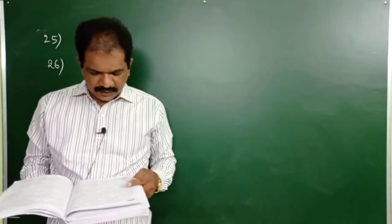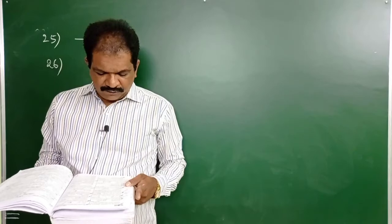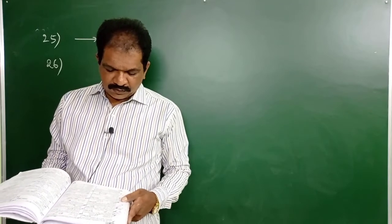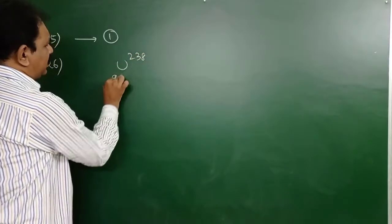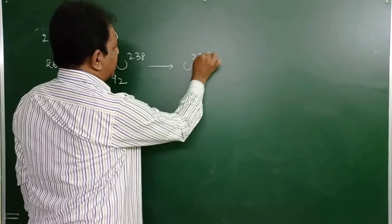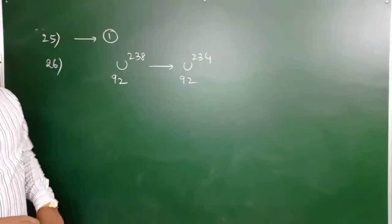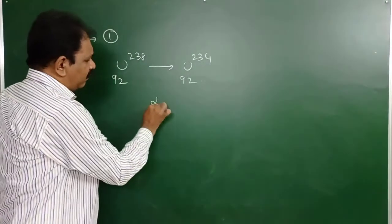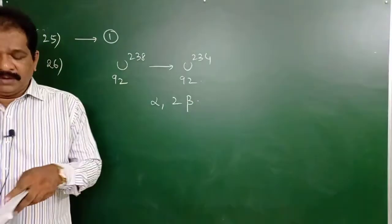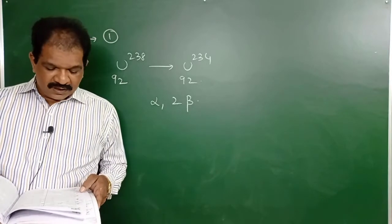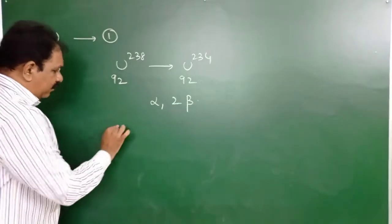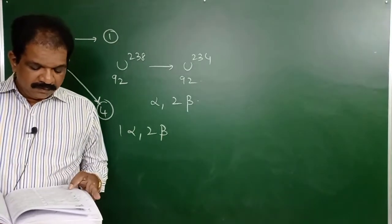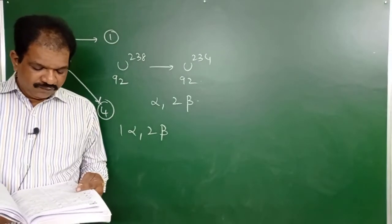Question 26: Particles emitted in the decay of Uranium-92-238 to Uranium-92-234. Mass number decreases by 4 units, no change in atomic number. This requires 1 alpha particle (reduces A by 4, Z by 2) and 2 beta particles (restores Z by 2). Checking the 4th option matches: 1 alpha + 2 beta particles. There may be a printing error in the question. Answer is 4th option.